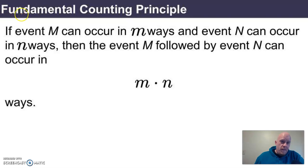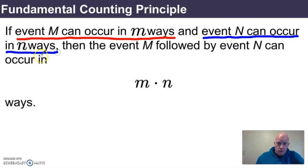Here is what we call the fundamental counting principle. And it says simply this: if event M can occur in m ways, in other words, if there are m ways that something can happen, and then event N, a different event, can occur in lowercase n number of ways.